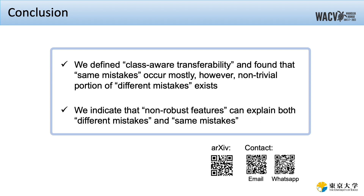Here's the conclusion. First, we defined class-aware transferability and found that same mistakes occur mostly; however, a non-trivial proportion of different mistakes exists. Then, we show that non-robust features can explain both different mistakes and same mistakes. Please see the details in our paper. Thank you.